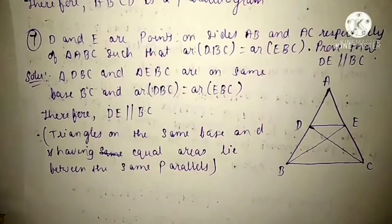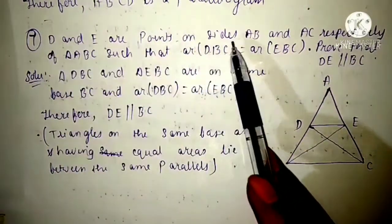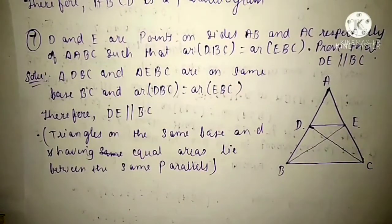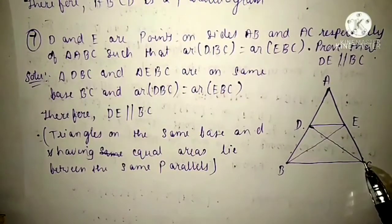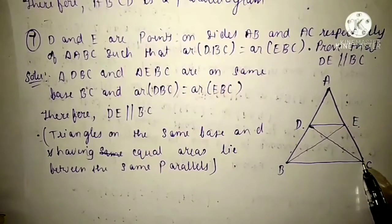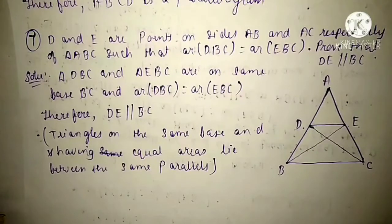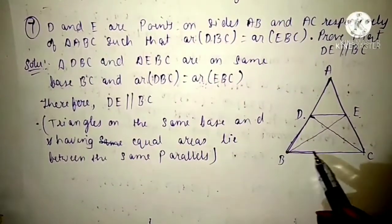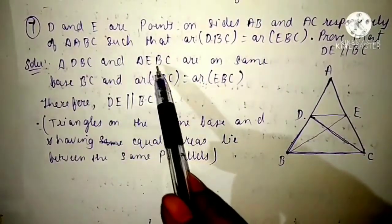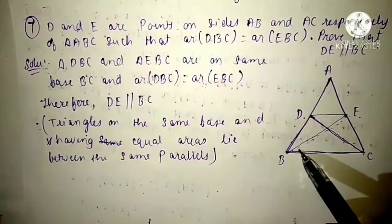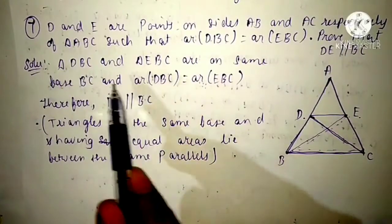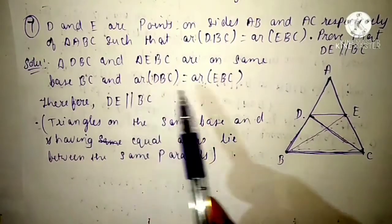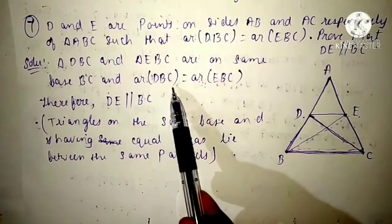Now see the seventh question. D and E are points on sides AB and AC respectively of triangle ABC, such that area of triangle DBC equals area of triangle EBC. We have to prove that DE is parallel to BC. Both triangles DBC and EBC are on the same base BC, and their areas are equal.